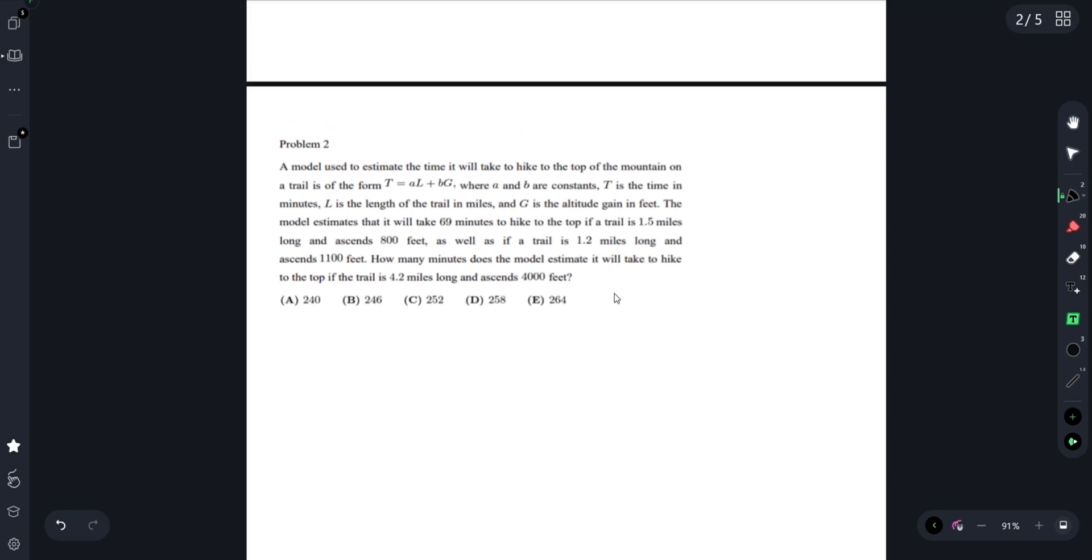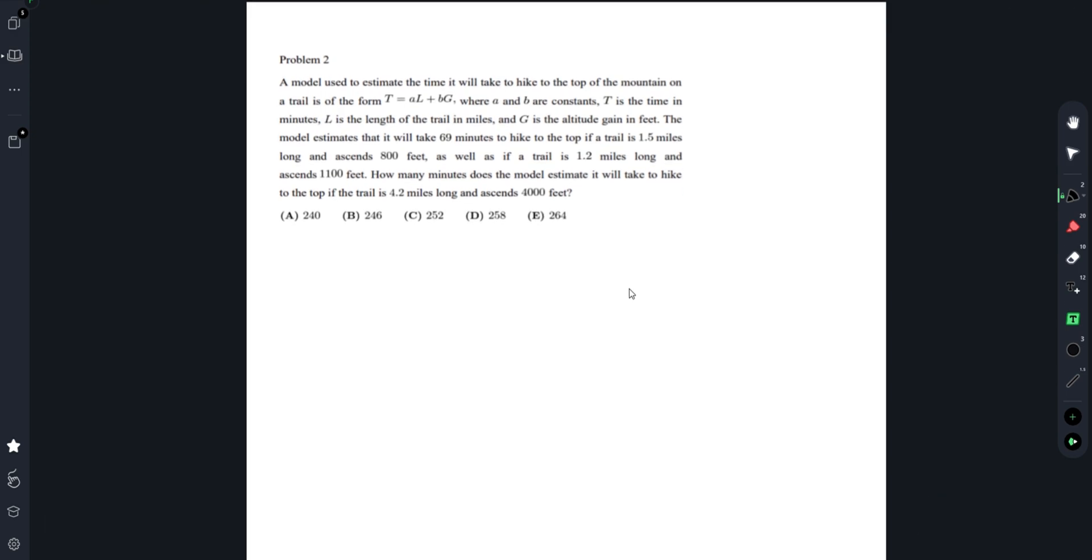Problem 2: A model used to estimate the time it would take to hike to the top of the mountain on a trail is of the form T equals AL plus BG, where T is the time in minutes, L is the length of the trail in miles, A and B are constants, and G is the altitude gain in feet.